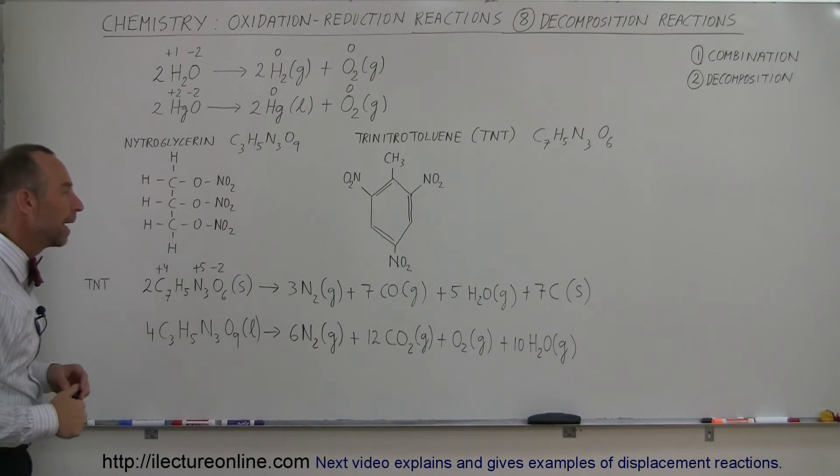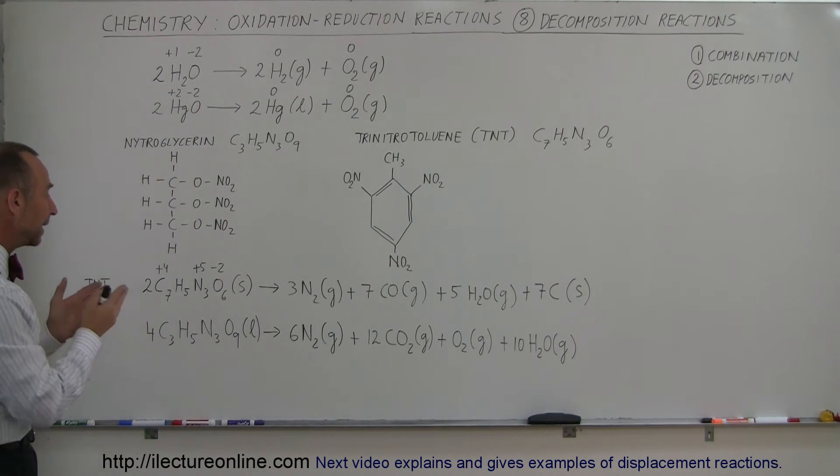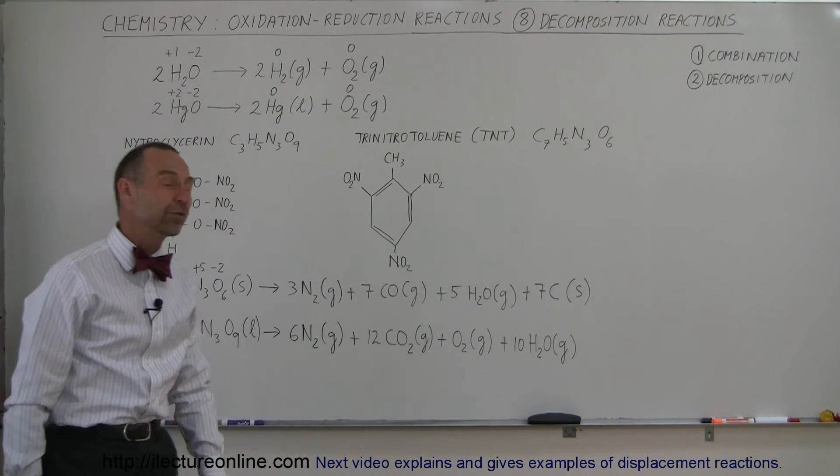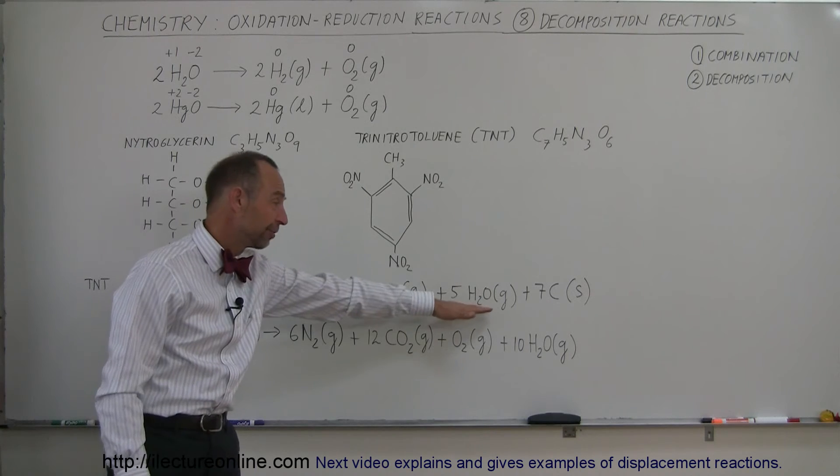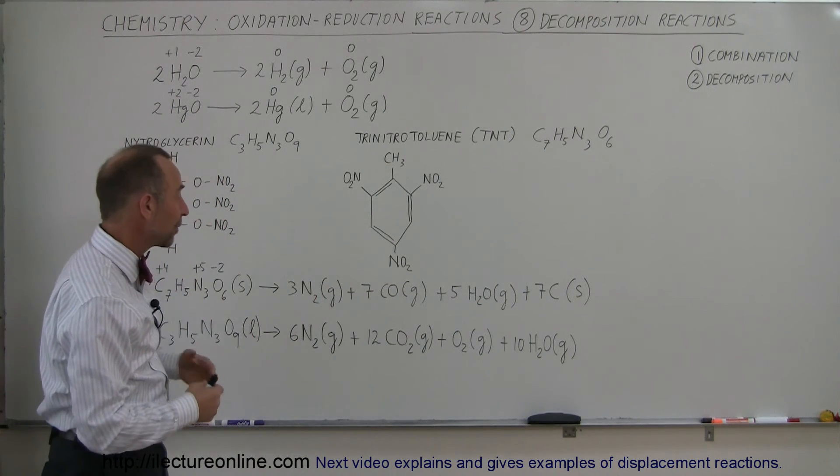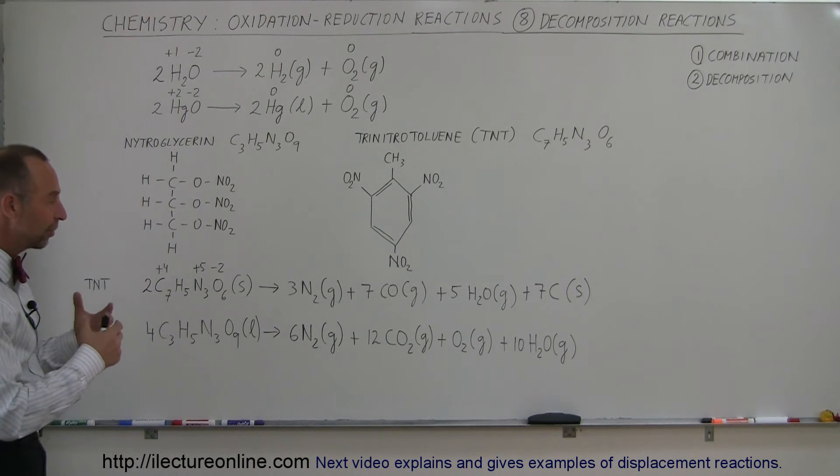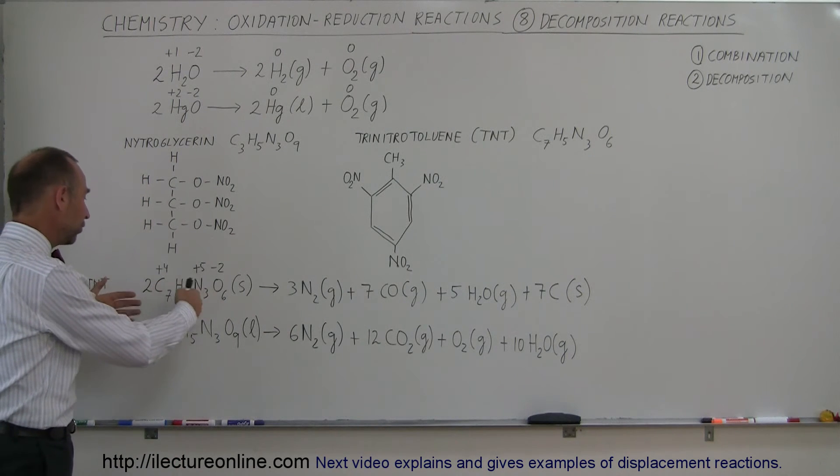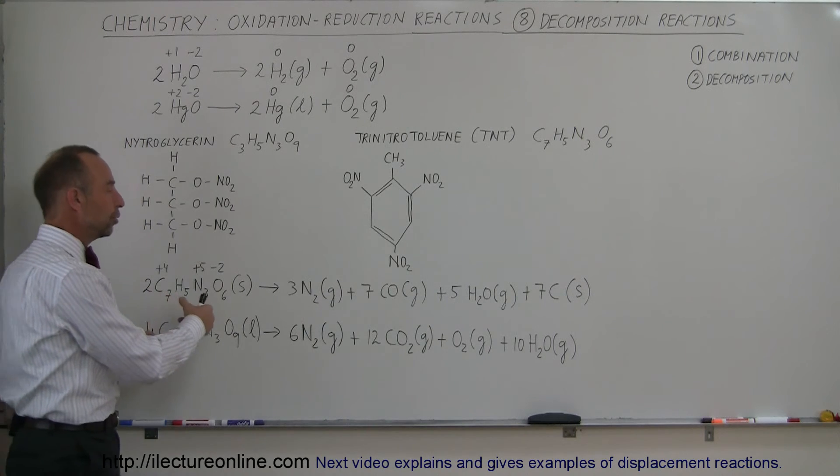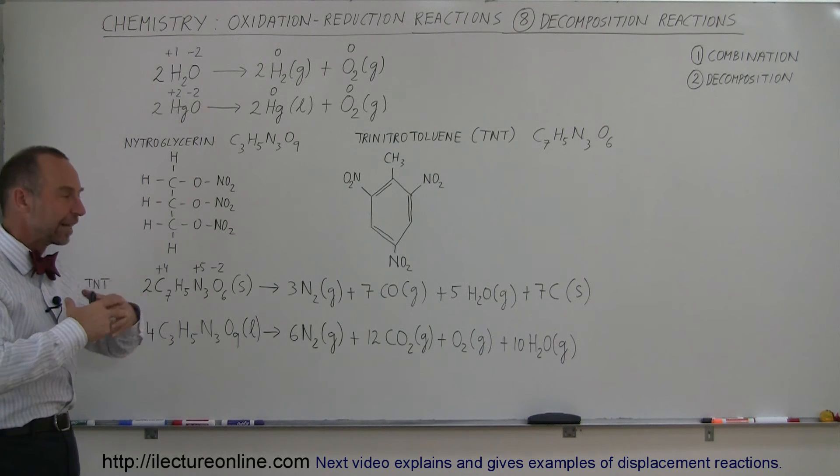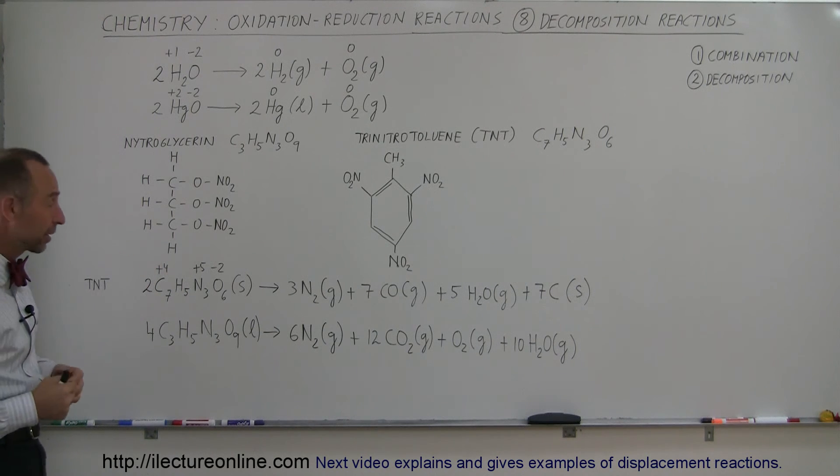Notice that two moles of TNT produces fifteen moles of gas: water vapor, carbon monoxide, and nitrogen gas under intense heat from the reaction. These molecules decompose into fifteen moles of gas under tremendous heat, which then expand, and that's where the explosive power comes from.